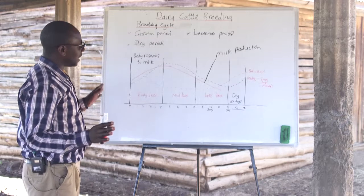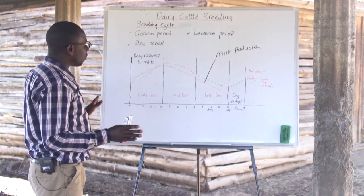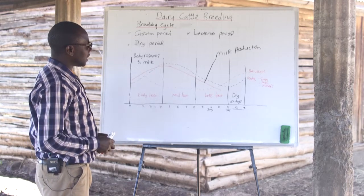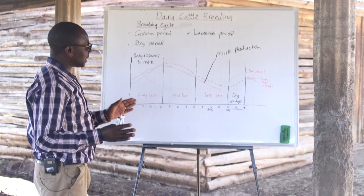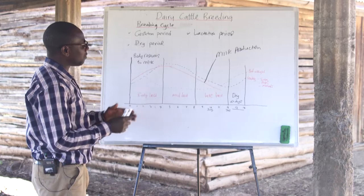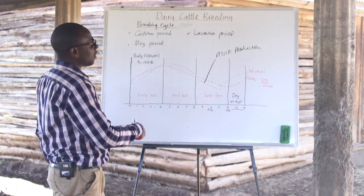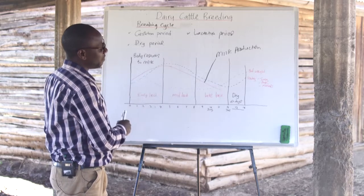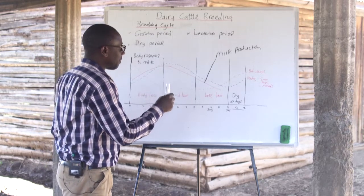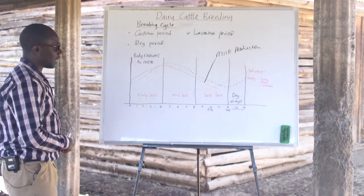So the standard dairy cow breeding cycle will look like this. The farmer has to be aware at what stage the animal is at, to prepare enough feeds and raise the animal towards the end of lactation, so that the animal is able to give enough milk and assure the farmer of a calf every year in every breeding cycle.